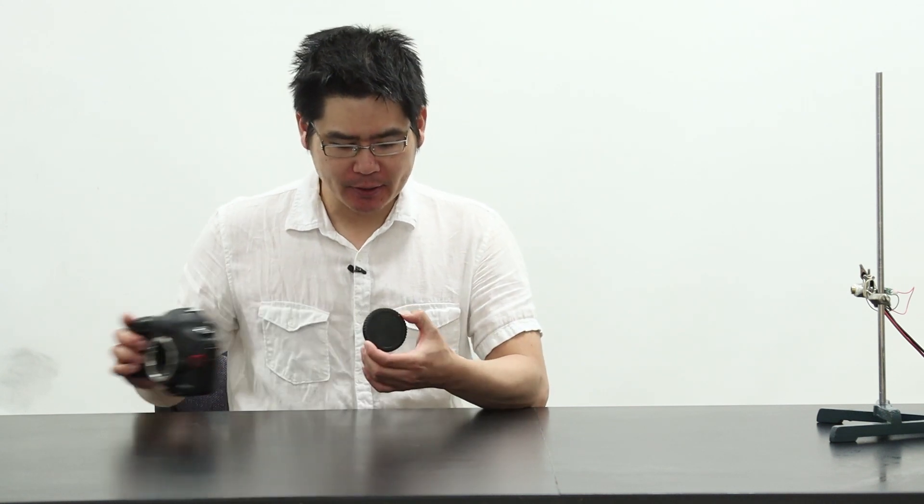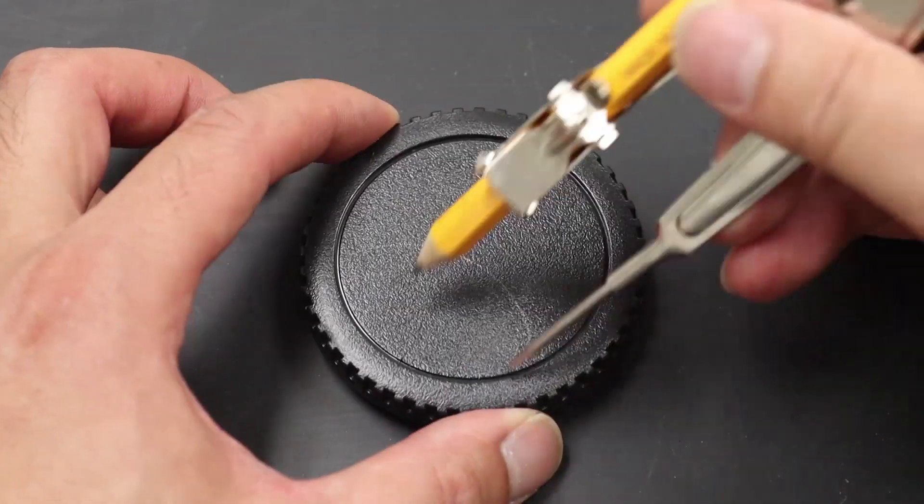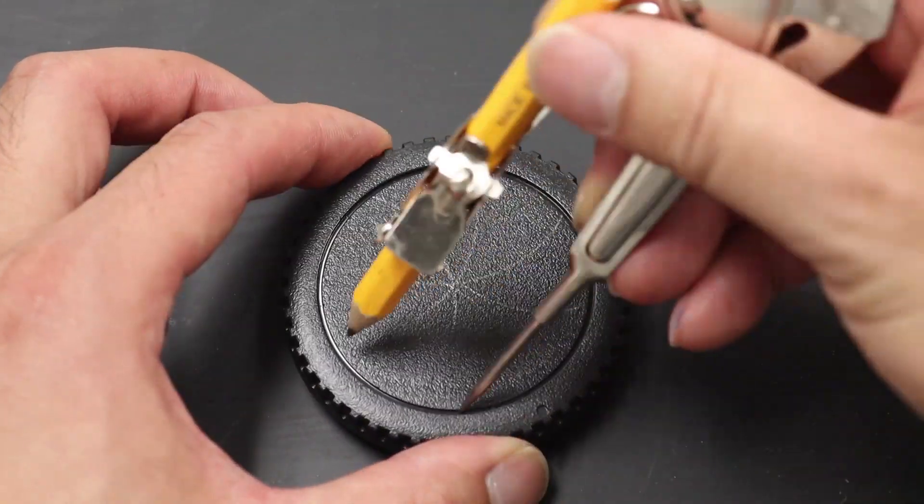In fact, you can convert your fancy expensive camera into a pinhole camera too. First, you take off the body cap, use a compass to find the center of the lens by drawing arcs that pass through the center of the lens.